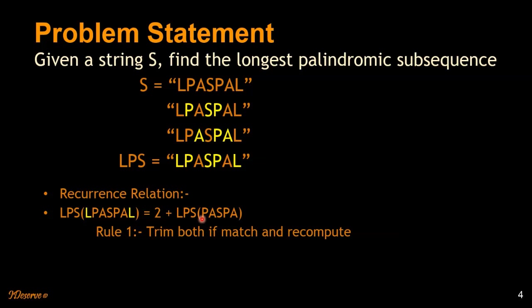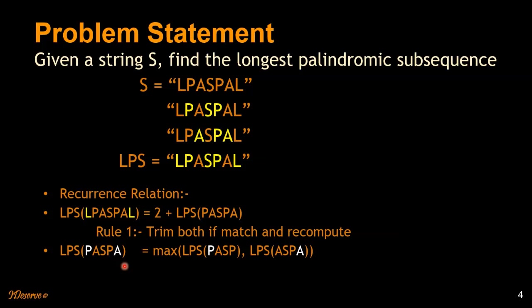Let's find the LPS of the remaining string PASPA. Here the first and last characters do not match. In longest common subsequence, the second rule was: if characters did not match, leave one character at a time, compute LCS for the remaining strings, and take the max. We do the same here. We leave A and compute LPS of PASP, and we leave P and compute LPS of ASPA. Then we take the max of these two.